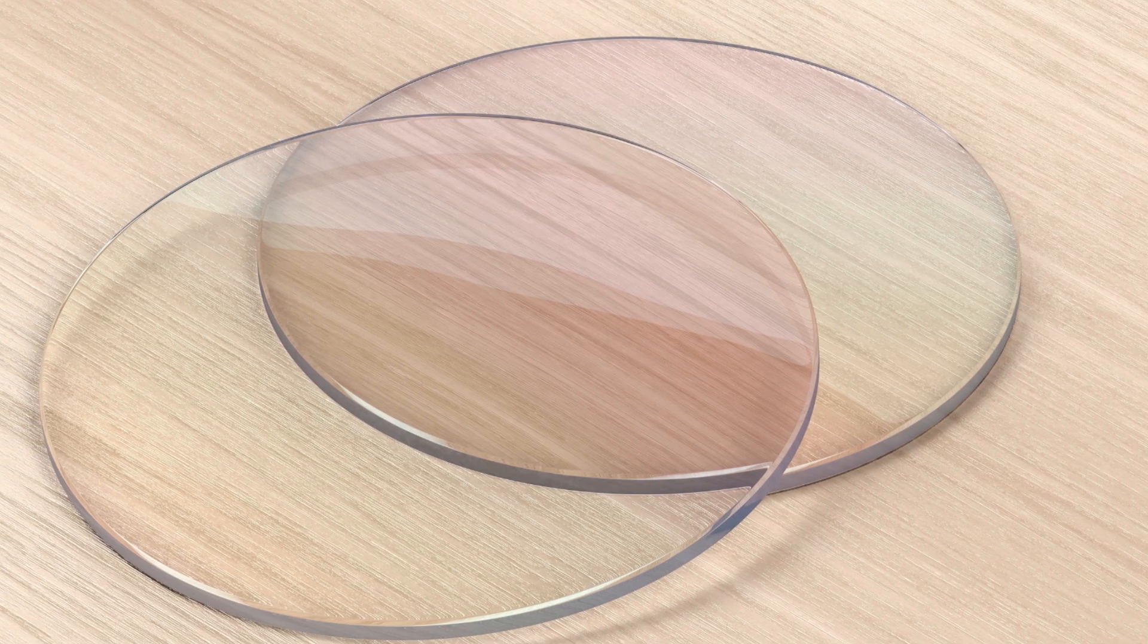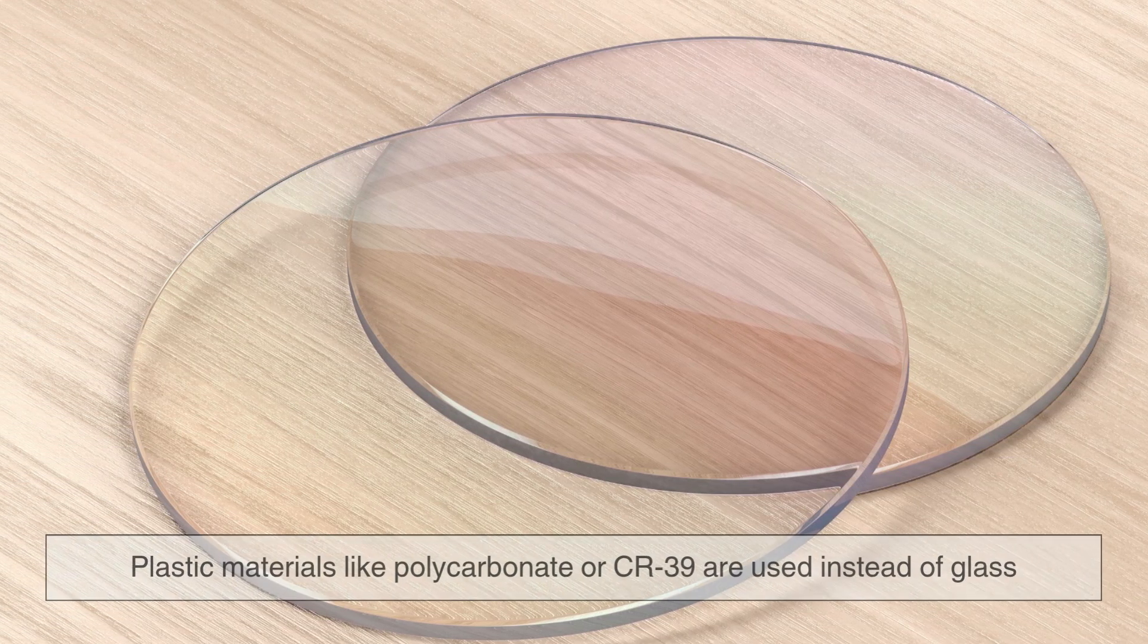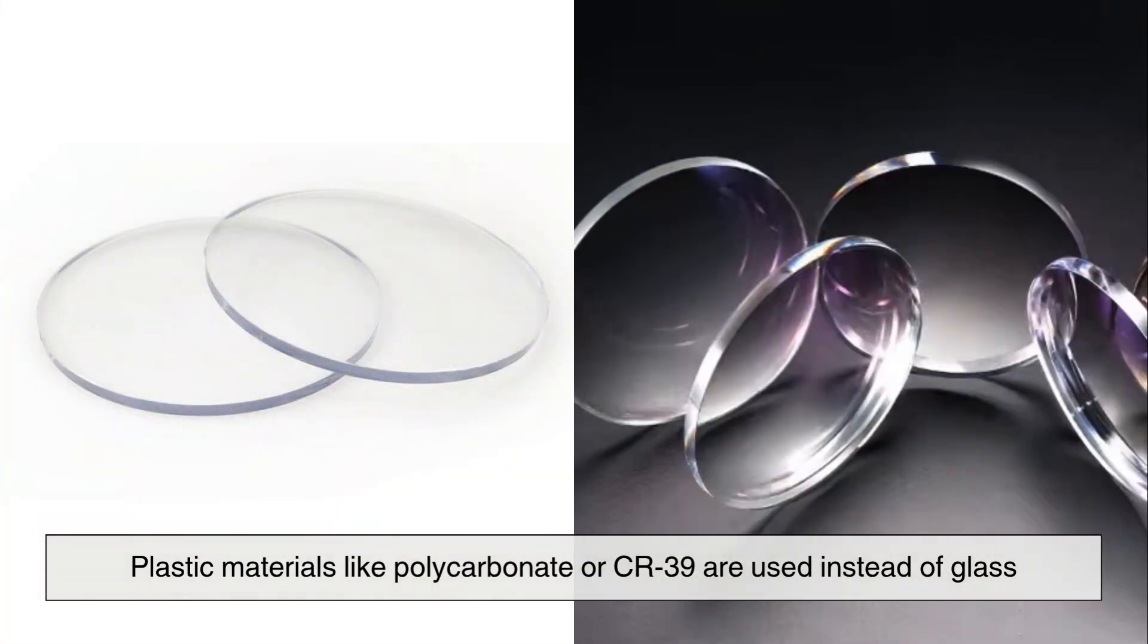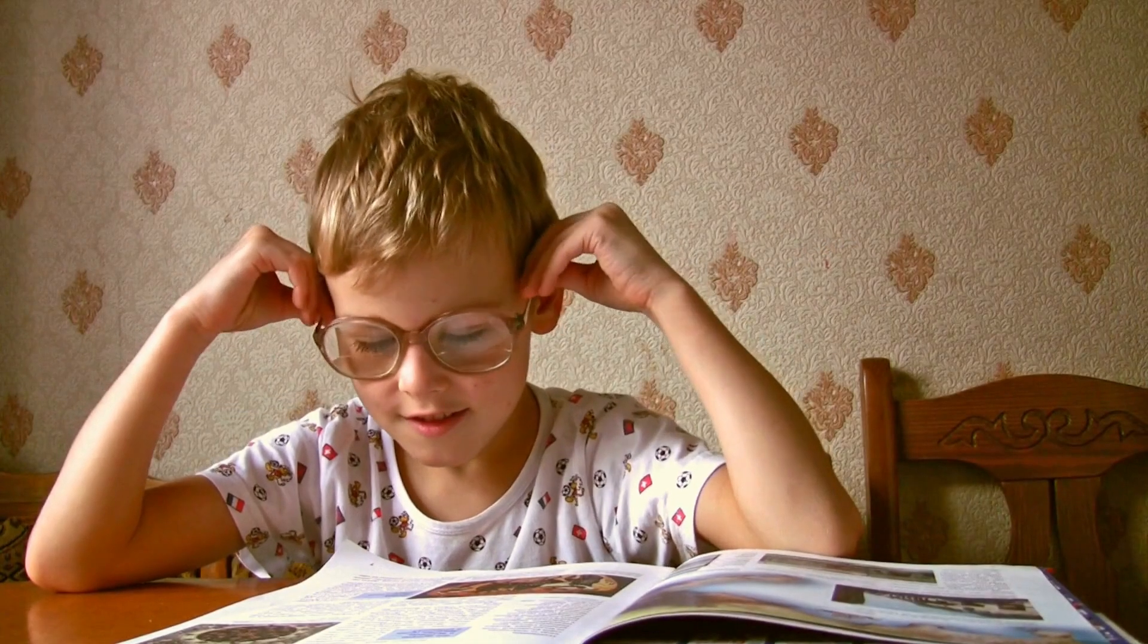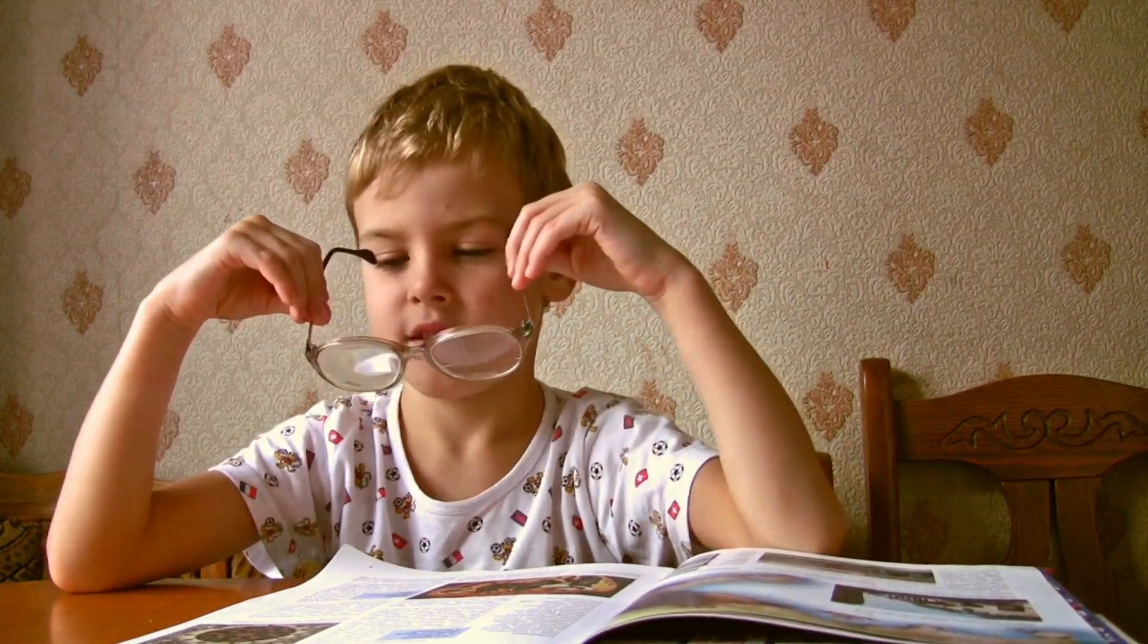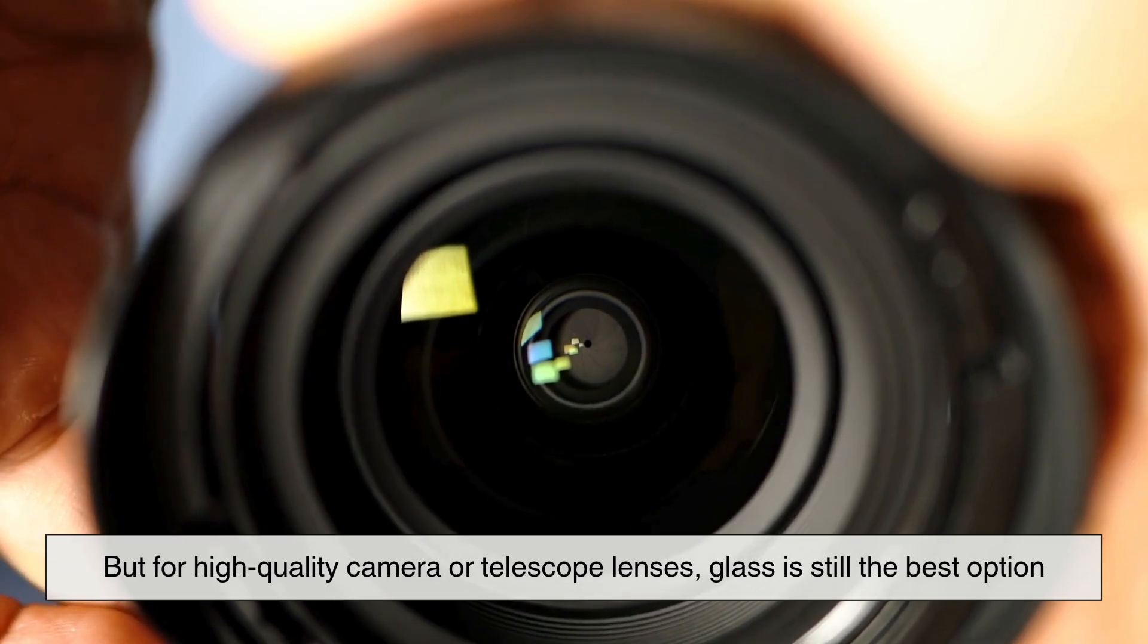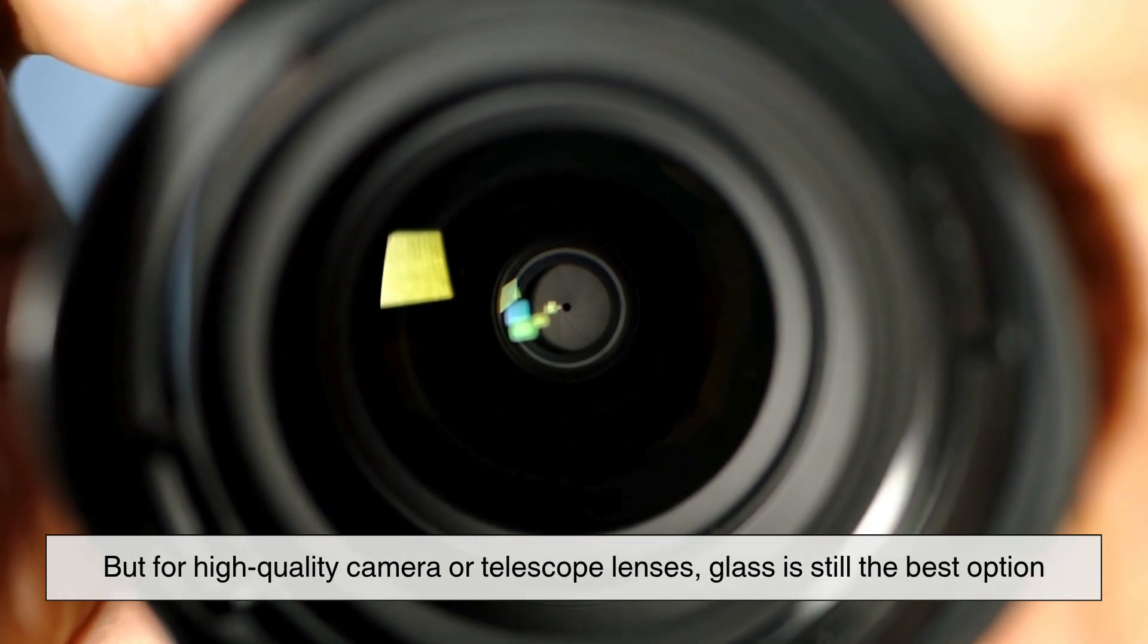In some cases, especially for eyeglasses, plastic materials like polycarbonate or CR-39 are used instead of glass. These are lighter and tougher, which makes them great for everyday wear. But for high-quality camera or telescope lenses, glass is still the best option.